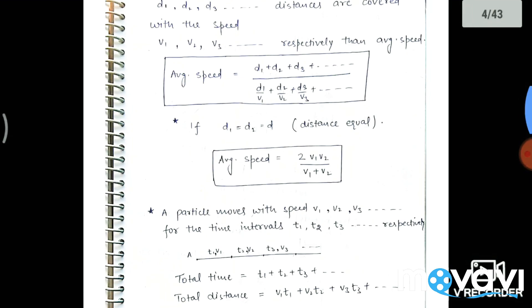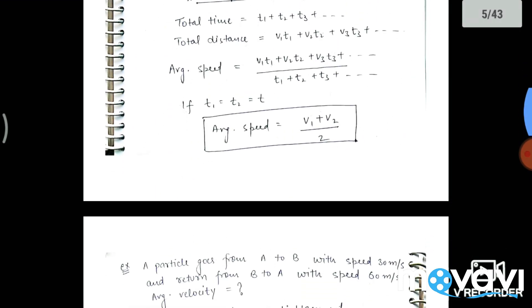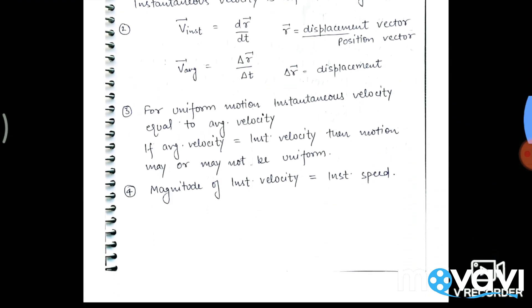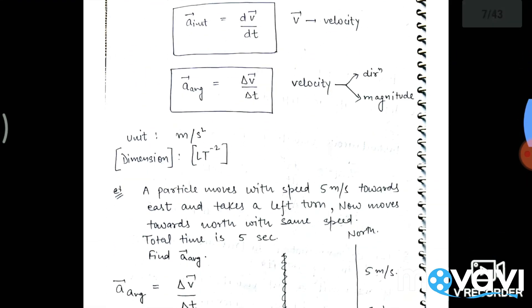In this formula, we have instantaneous velocity, average velocity, and acceleration.